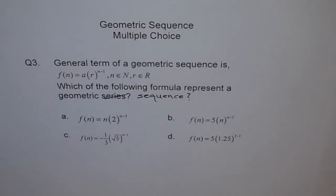Option A: f(n) equals n·2 to the power of (n minus 1). Is it a geometric sequence? Well, let us see. The term a, the first term should be a constant. It cannot be a variable, right? It cannot be 1, 2, 3, 4. It has to be a constant.